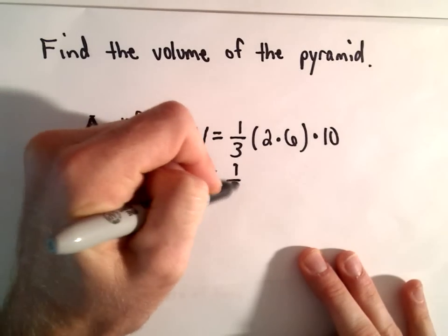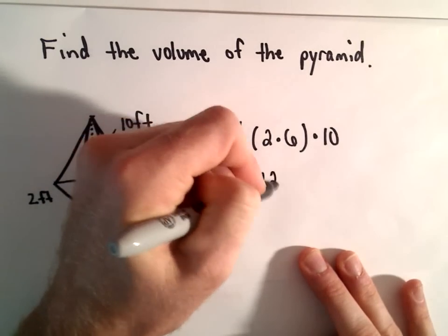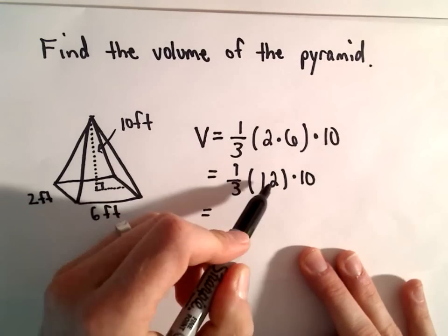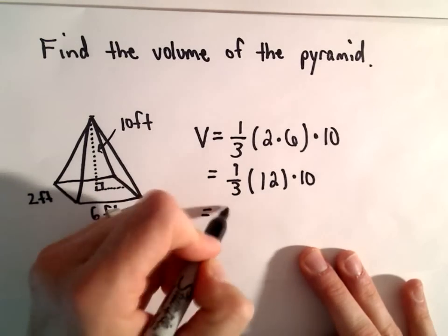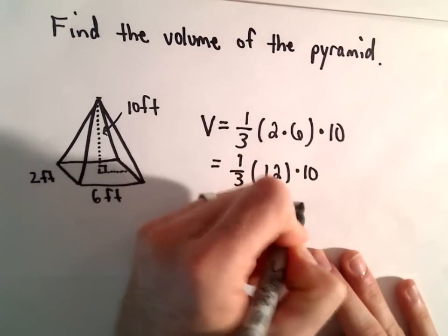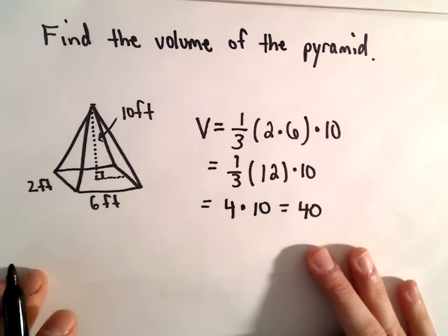So let's see. Two times six would be twelve. One-third times twelve would be four. And then four times ten will be forty. And just like that, we've got our solution.